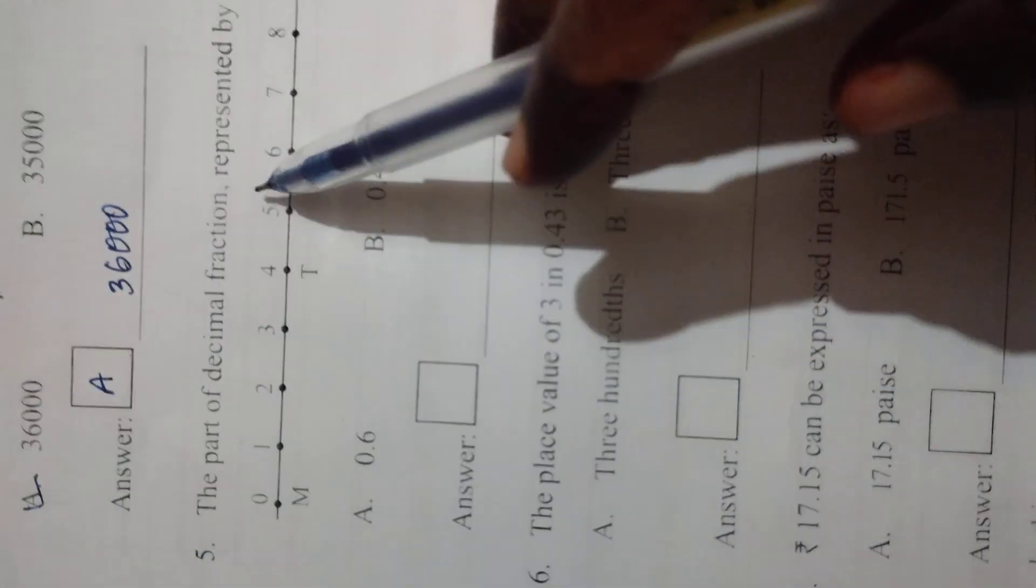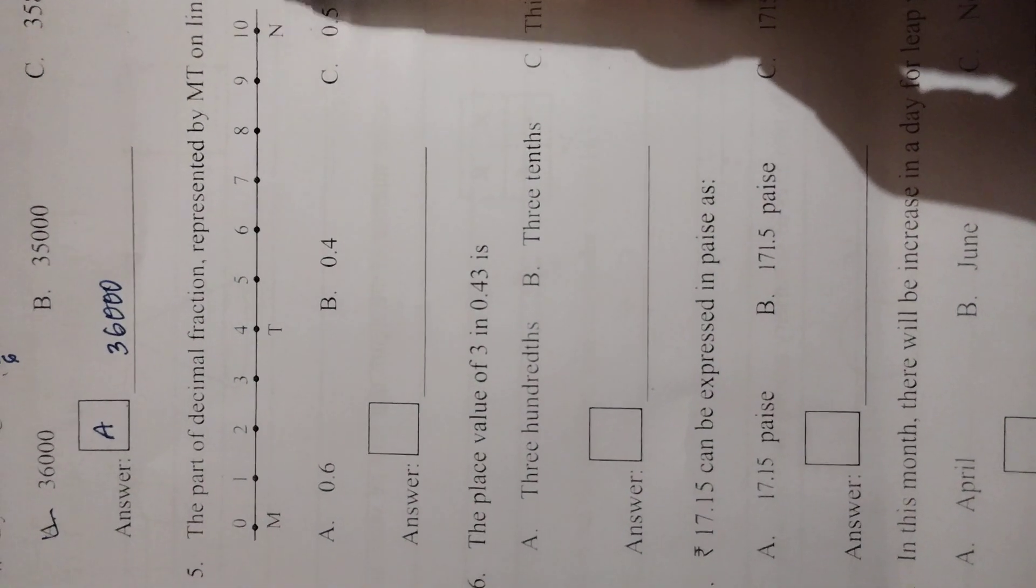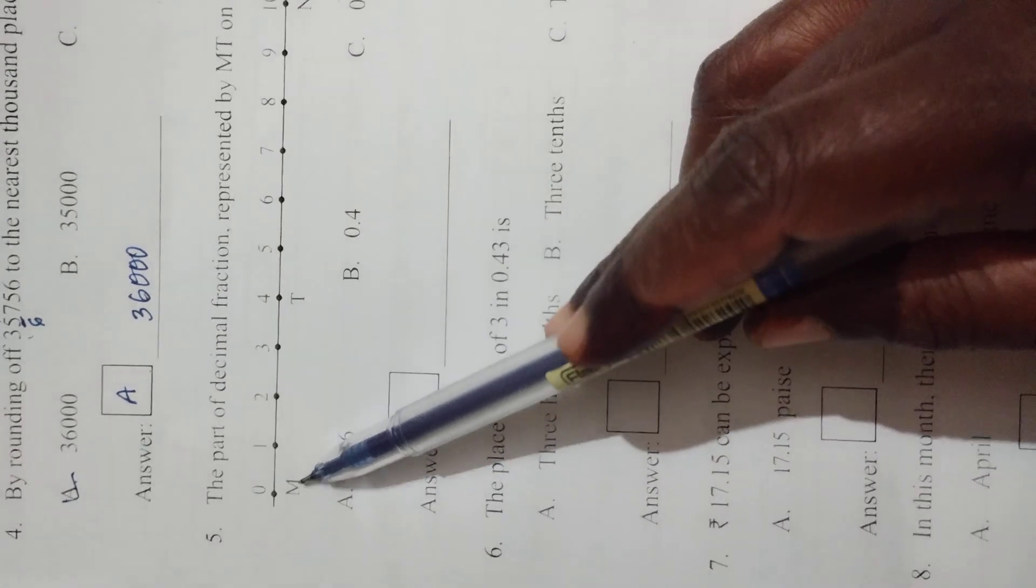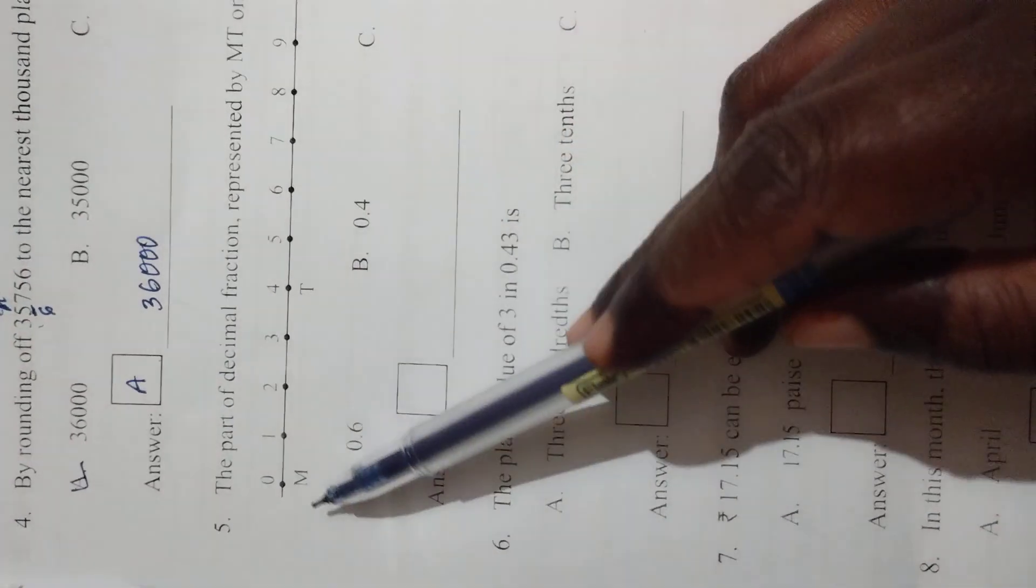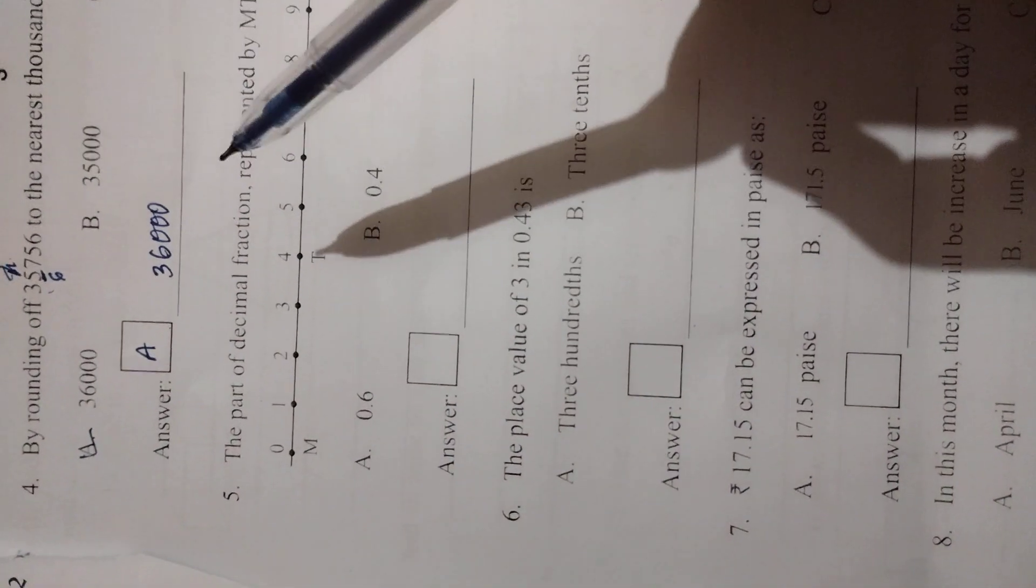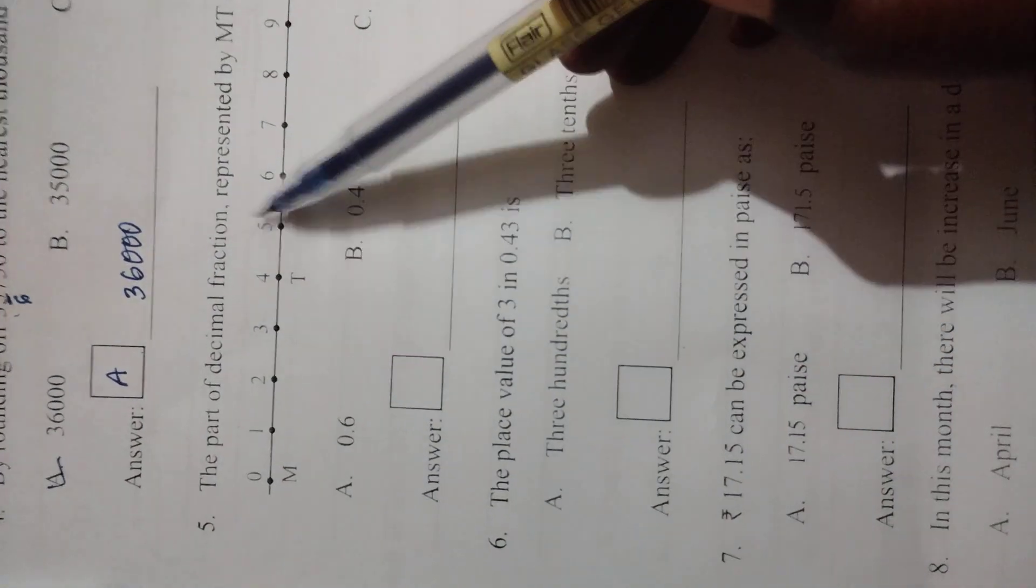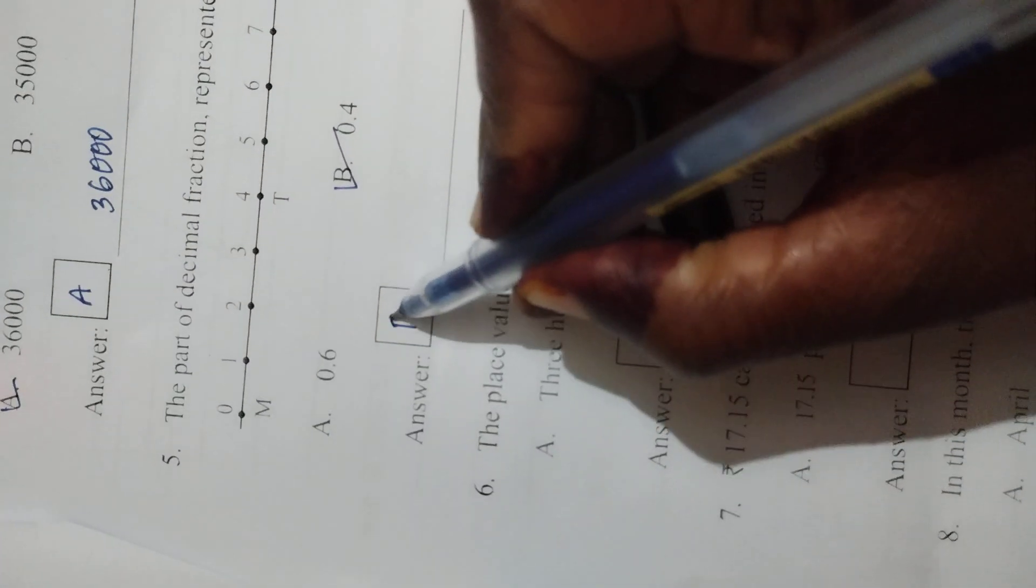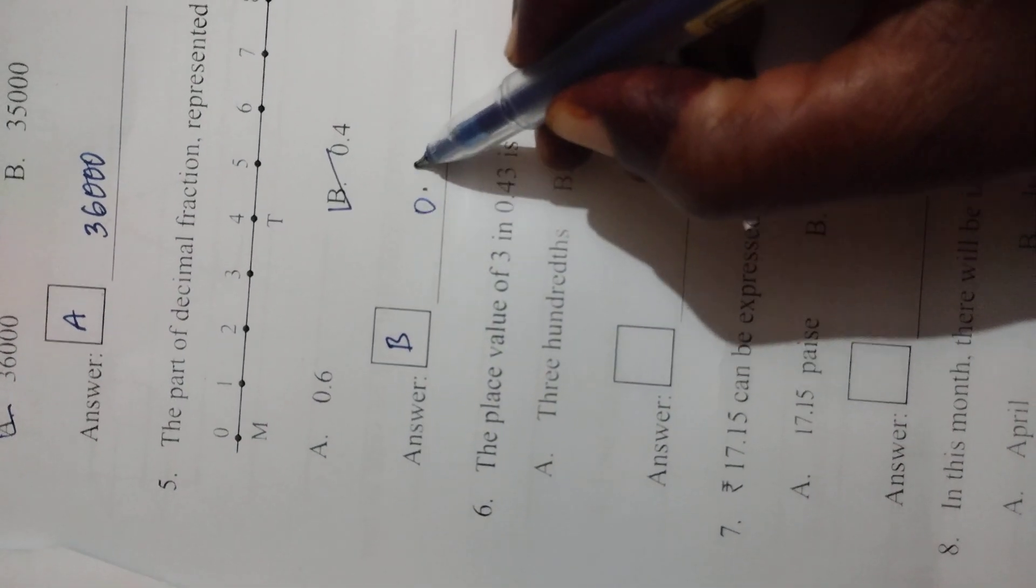Next, the part of decimal fraction represented by MT in line segment MN is. This is one line segment M and N. Here MT means you can write 0 to 4. You can write in decimal points: 0.4. So B is the correct answer, B, you can write 0.4.